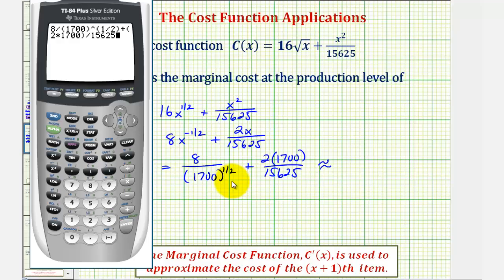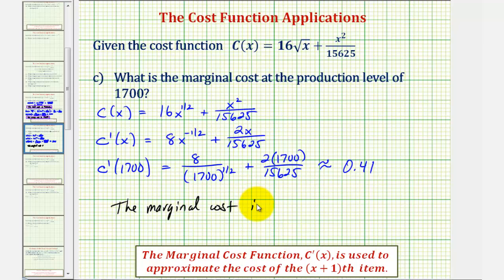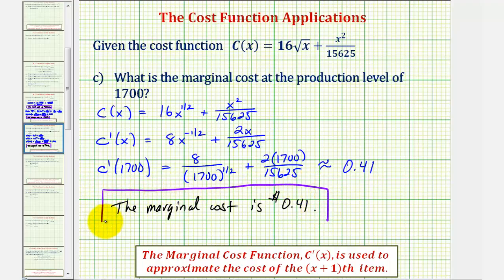Back to the calculator — this time I used the rational exponent in the denominator rather than the square root. Writing to the nearest cent, this would be approximately $0.41. The marginal cost at this production level is 41 cents, which means when the production level is 1,700, it'll cost approximately 41 cents to make the next item.